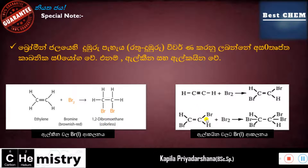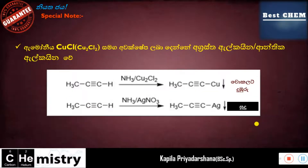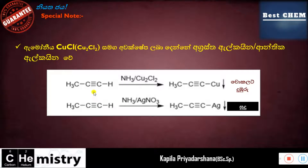It is a different type of electricity that we use in the cell. This is the example of the bromine. This is a special note. This question is about ammonia cuprous chloride. The important thing is that ammonia cuprous chloride is CO2. The alkyne is the case of alkyne.